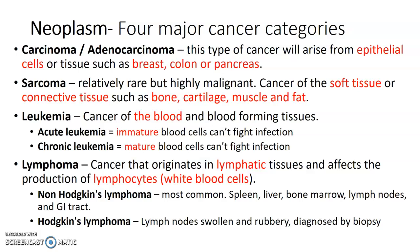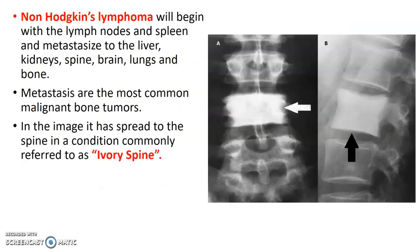Hodgkin's lymphoma presents with swollen, rubbery lymph nodes and is diagnosed by biopsy. Non-Hodgkin's lymphoma begins with the lymph nodes and spleen, and can metastasize to the liver, kidneys, spine, brain, lungs, and bone. Metastases are the most common malignant bone tumors.